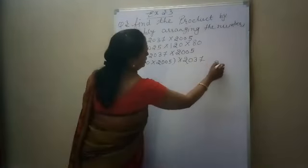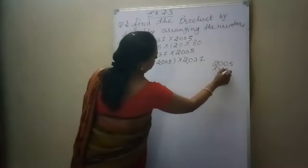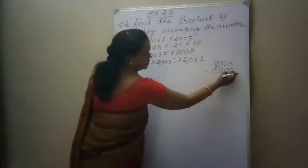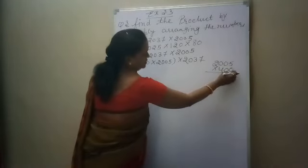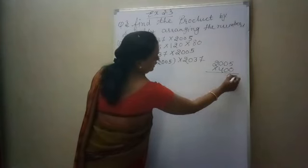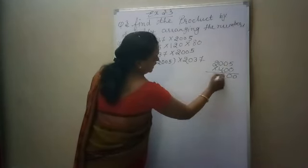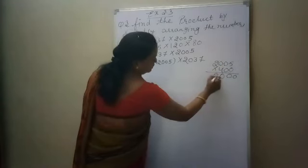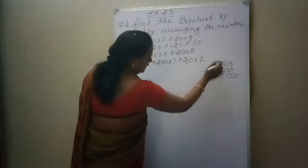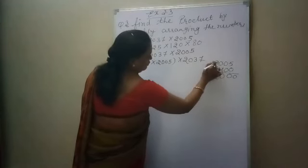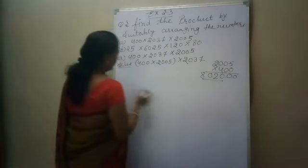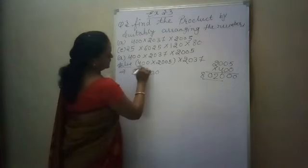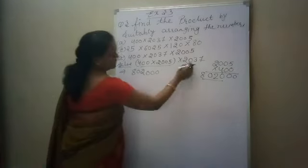Now do the multiplication of 2005 into 400. As we know, 0 multiplied by any number, your answer is 0. So here we will write down 20, then 4 — 5 is 20, 2 is the carry. 4 into 0 is 0, so we write down 2. 4 multiplied by 0, then 4 times 2 is 8. So your answer will be 802,000 — that is the answer of these 2 numbers.